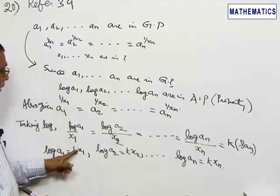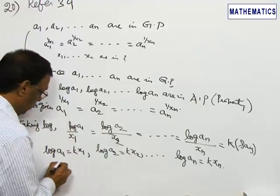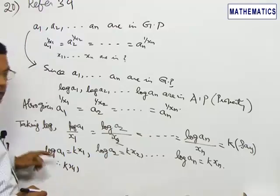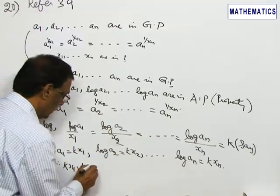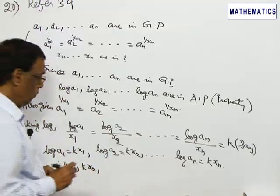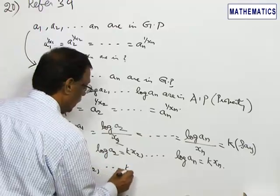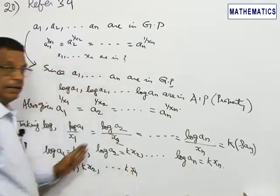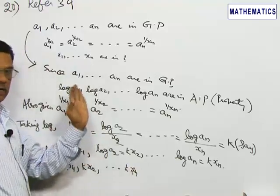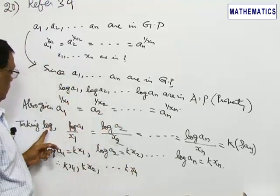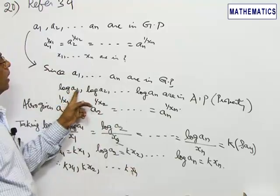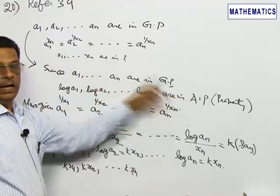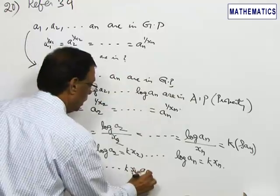Now take the n numbers K·x₁, K·x₂, ..., K·xₙ. These are nothing but log a₁, log a₂, ..., log aₙ, which we have just seen are in arithmetic progression. Therefore, K·x₁, K·x₂, ..., K·xₙ are in AP.